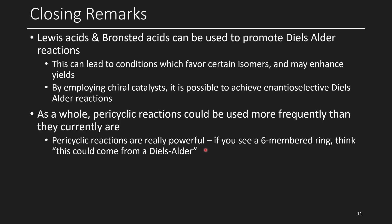As a whole, pericyclic reactions such as the Diels-Alder could be used more frequently than they currently are in synthetic chemistry. I think they're extremely powerful, and I hope the one thing you take away from this lecture is that if you see a six-membered ring, you should think: this could come from a Diels-Alder reaction. Thanks for listening. If you want to see more in the future, make sure you leave a comment below. Maurice, I hope you have a very Merry Christmas, and to the rest of you viewers as well — thanks for watching, and have a great day.